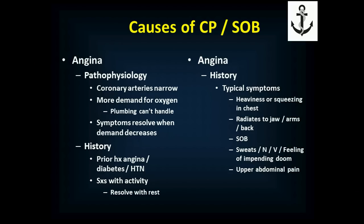Typically the patient reports a prior history of angina, or they have diabetes or high blood pressure predisposing them to heart disease. They describe symptoms occurring with activity and resolving with rest. Typical symptoms are heaviness or squeezing in the chest that can radiate to the jaw, arms, or back; shortness of breath; sweats; nausea or vomiting. Sometimes they describe a feeling of impending doom. In women, diabetics, or frankly anyone, symptoms may present as upper abdominal pain in the epigastric area just below the xiphoid process.